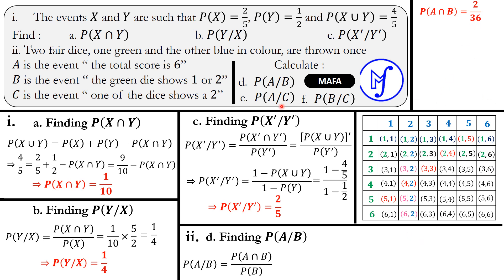P(B) is the probability that the green die shows a 1 or a 2. The first row has the green die showing 1 — all 6 outcomes. The second row has the green die showing 2 — all 6 outcomes. That gives 12 favorable outcomes, so P(B) = 12/36. Therefore, P(A|B) = (2/36) / (12/36) = 2/12 = 1/6.